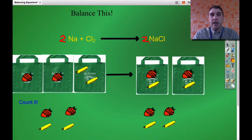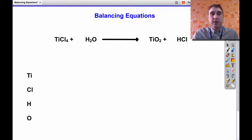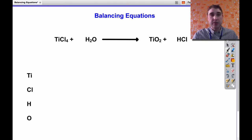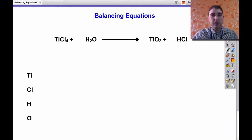Now we're going to try it without doing the strawberries and bananas — without using the shopping bag analogy. We're going to do it in our head. We'll still write down our numbers of atoms, but in a slightly different way. So this is our equation: titanium chloride reacting with water to produce titanium dioxide and hydrochloric acid.